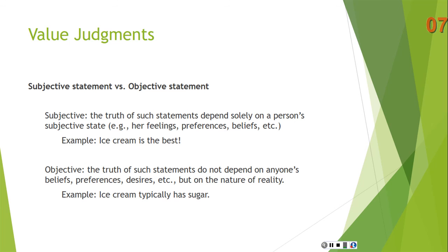Now, it could be that ice cream really is the best — but that would be something like everyone agrees that ice cream is the best. Although there also could be sort of objective features about ice cream and the way that they impact the human taste bud and the way the brain fires up, such that the properties of ice cream have this particular impact on human beings. So there might be something objective about it after all. But ice cream is the best is typically given as a prime example of a subjective truth, a truth that depends solely on a person's subjective state.